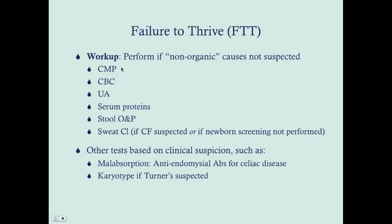You'll want to get a complete metabolic profile, a CBC, urinalysis, serum proteins, stool ova and parasites, and a sweat chloride test — particularly if you suspect cystic fibrosis or the newborn screening has not been performed. Other tests can be done based on clinical suspicion. If the child has symptoms consistent with malabsorption plus signs of vitamins A, D, E, or K deficiencies, get anti-endometrial and anti-tissue transglutaminase antibodies, which will point towards celiac disease if positive. If you suspect Turner syndrome in a girl, you can get a karyotype.